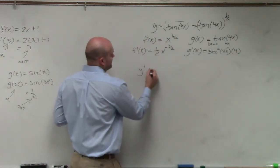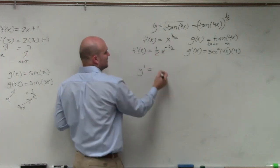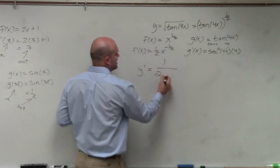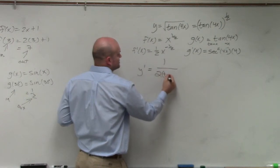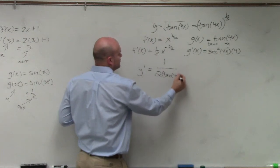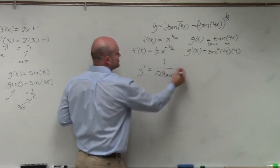So to find y prime, x to the negative 1 half, in reality is the same thing as 1 over 2 times my function, which is tangent of 4x raised to the 1 half, or you could use the square root,